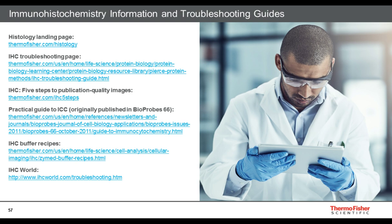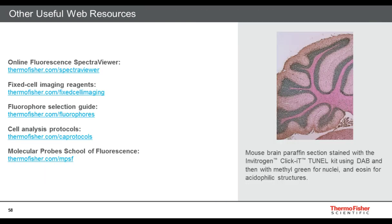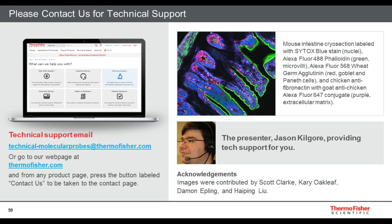These last slides are some great links to come back to later. We have a number of immunohistochemistry, histology, and immunocytochemistry pages and articles on our webpage. The third link there is specific to this webinar — the five steps to publication quality images. There are also other useful web resources: the Spectra Viewer, our Fluor 4 Selection Guide, and our Molecular Probes School of Fluorescence, which talks about the basics of imaging. I highly recommend anyone starting out, undergrads, or even those wanting refreshers go to the School of Fluorescence for great tips. I'll now open up for any questions.